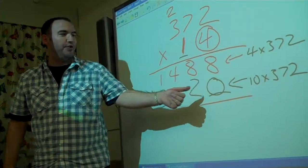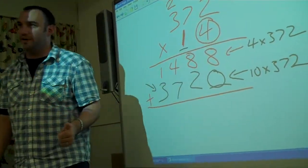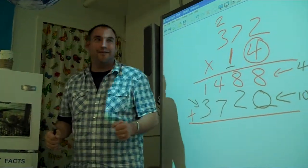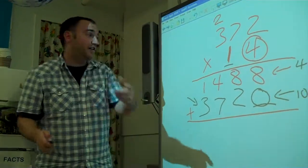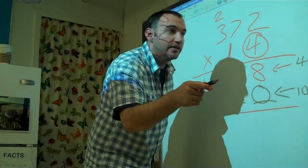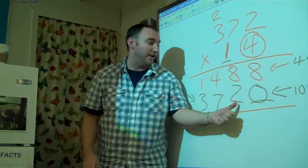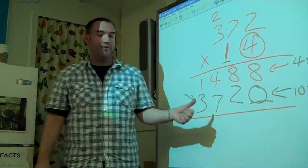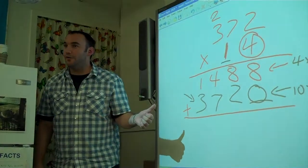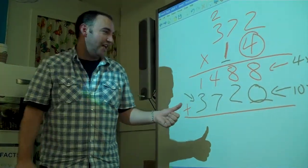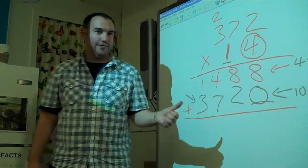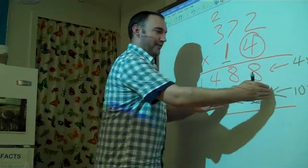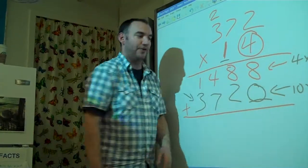Anyone want to put into words why that zero goes there? It's a great discussion. It's a number of tens — this is 372 tens, or ten 372s. Last year someone said it's a placeholder: it makes sure I don't put the 372 in the wrong place.